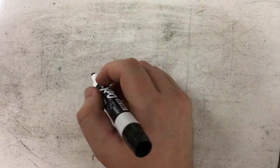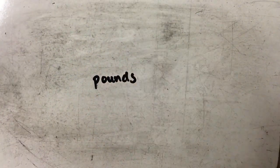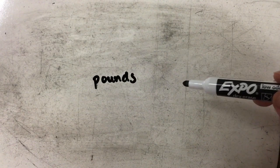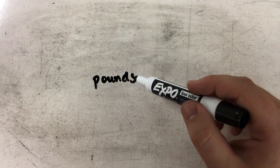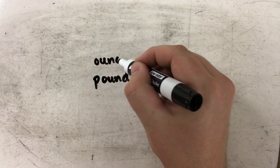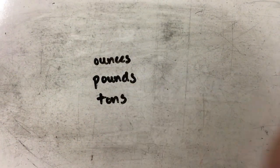The one you're most familiar with is probably how much you weigh, and we would measure that in pounds. But we also have two other units as well that we need to know. In addition to pounds, smaller than pounds we have ounces, and larger than pounds we have tons.